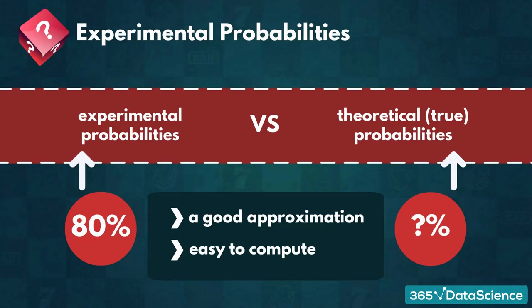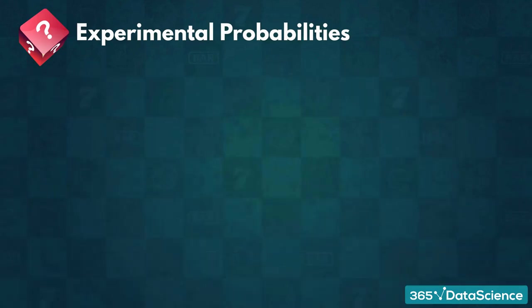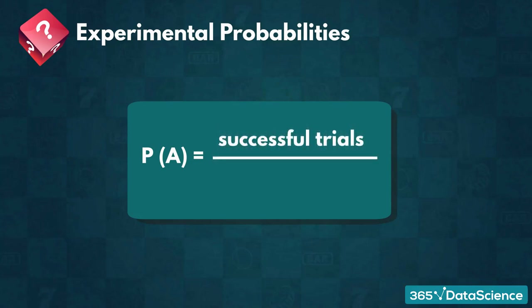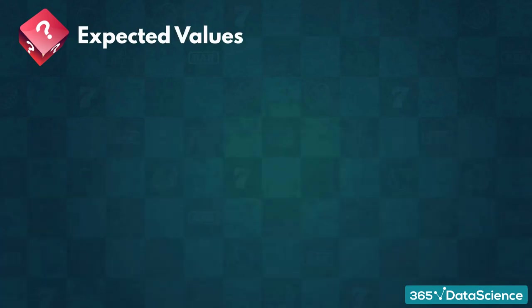The formula we use to calculate experimental probabilities is similar to the formula applied for theoretical ones. It is simply the number of successful trials divided by the total number of trials. Now that we know what an experiment is, we are ready to dive into expected values.